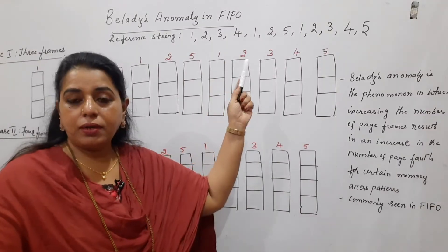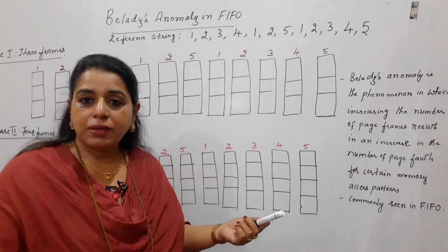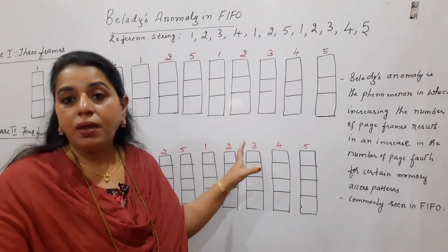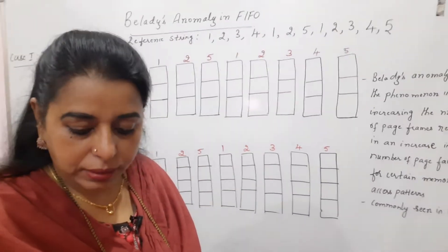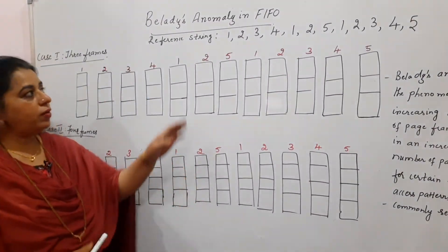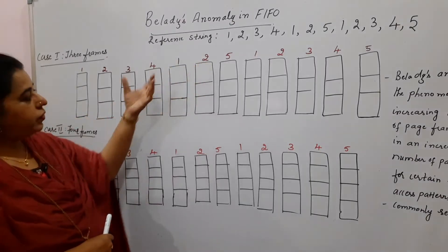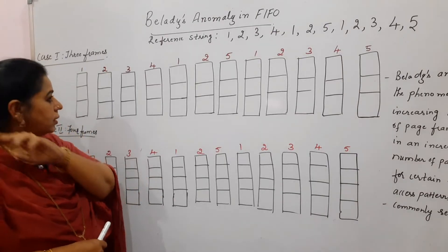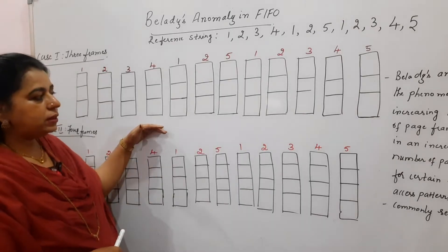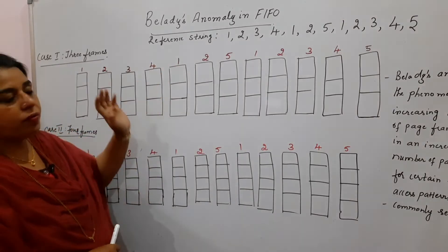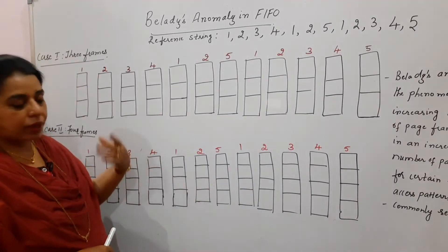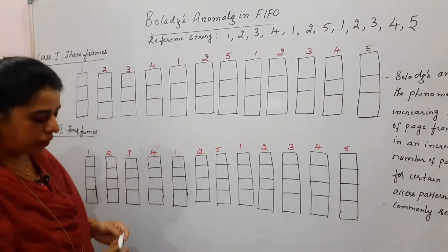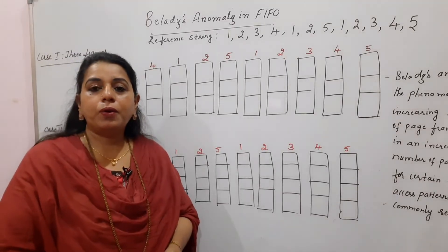This is the reference string chosen to demonstrate this phenomenon. Normally you cannot use the previous reference string to see whether this phenomenon exists, as it can only be seen for certain memory access patterns. For the problem statement, given the reference string, we carry out FIFO first using three frames, then using four frames, and compare the number of page faults. The 12 page numbers require sketching physical memory twice — once with 3 frames and once with 4 frames.